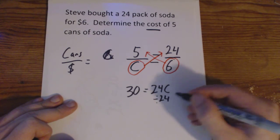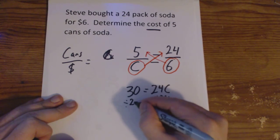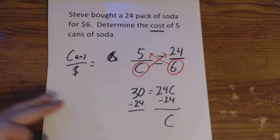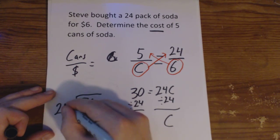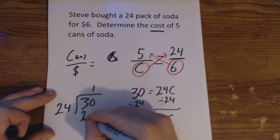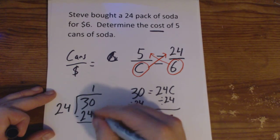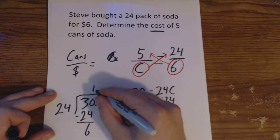We have to divide by 24. All we have left over here is C. Over here, we want to divide by 24. So 30 divided by 24. Does it go into 3? No. Does it go to 30? Once. 2, 4. You have a 6. Remember your decimal. Remember to bring it up here as well.